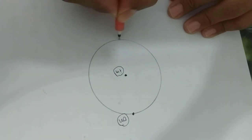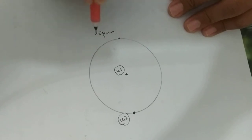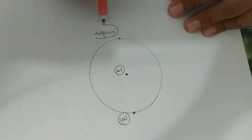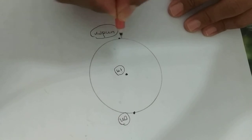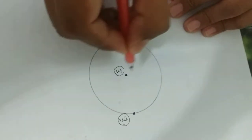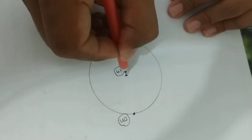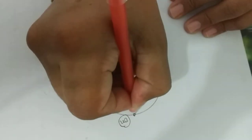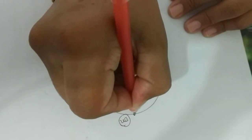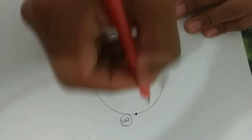কোনো কিছুর নিচে বোঝাতে 'under' বসে। আমরা আরেকটা rule শিখে গেলাম — কোথায় 'under' বসে? This is a circle. Under, On. And in the central point, In. তাহলে আমরা 'in'-এর ব্যাবহার জানলাম, surface-এর উপরে 'on' বসে, এবং কোনো কিছুর নিচে 'under' বসে।